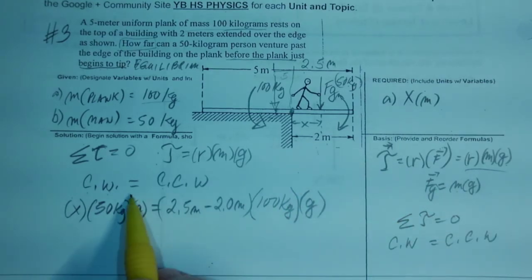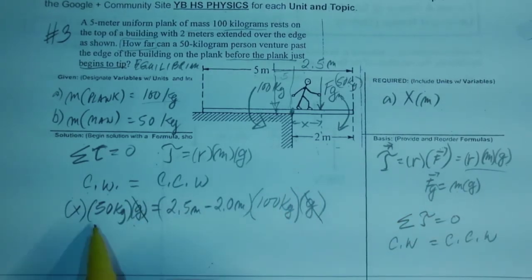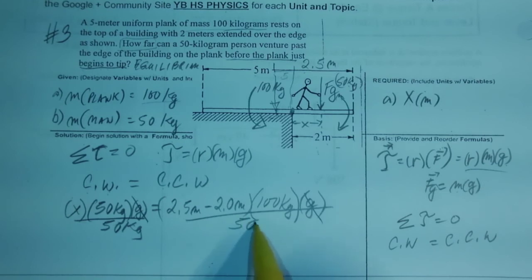Because g is multiplied to both sides, they cancel. If we want to get x, we have to divide both sides by 50 kilograms. It's good that you go step by step so that you don't make a mistake. x is equal to, and then you just have to solve for that.